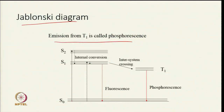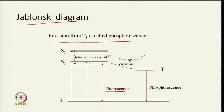In the Jablonski diagram, if a molecule absorbs light it goes from S0 to S2, then internal conversion brings it to the lowest vibrational state of S1, and fluorescence occurs from there. Going from a higher vibrational level to the lowest vibrational level of the excited state is internal conversion, whereas going from singlet state to triplet state is intersystem crossing, and emission from T1 to S0 is phosphorescence.